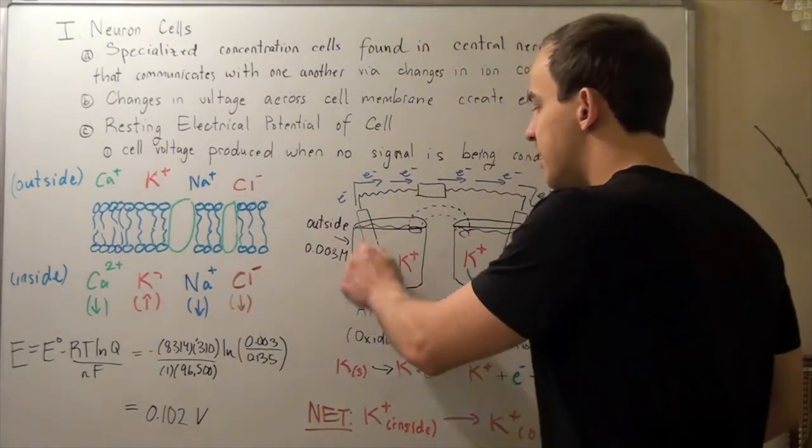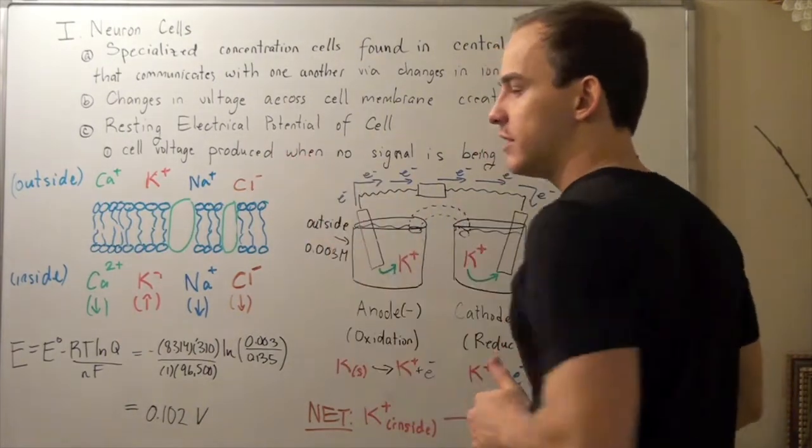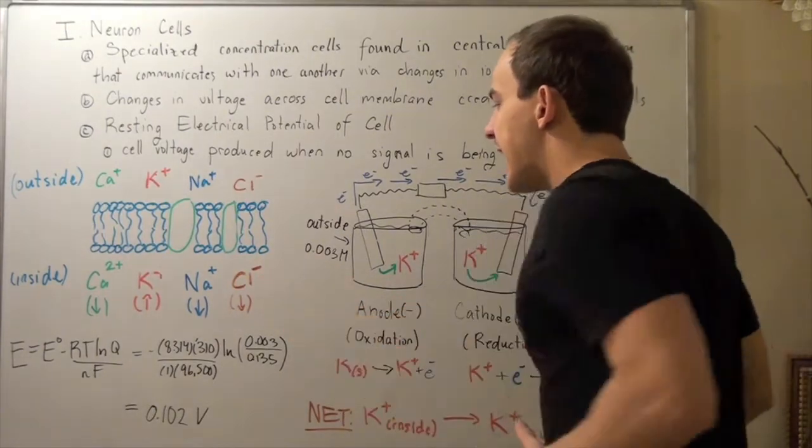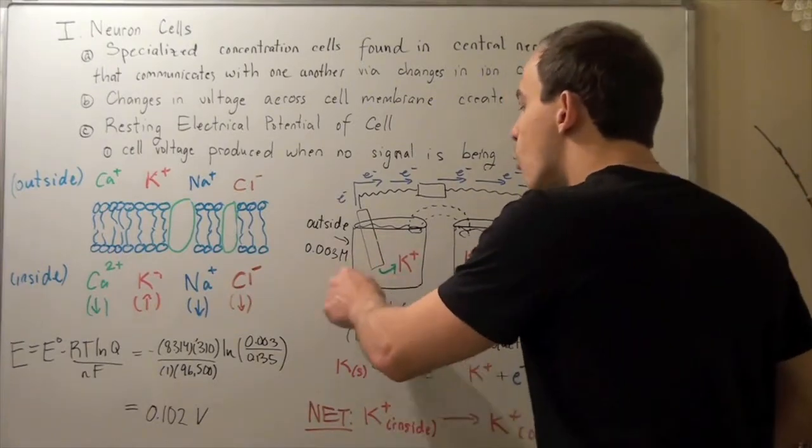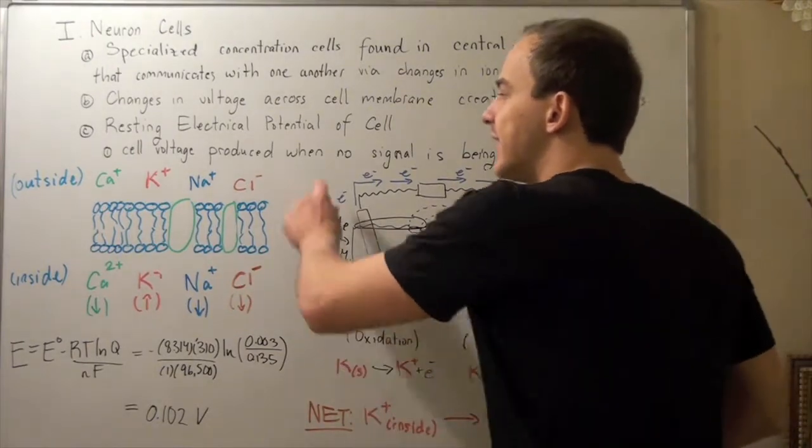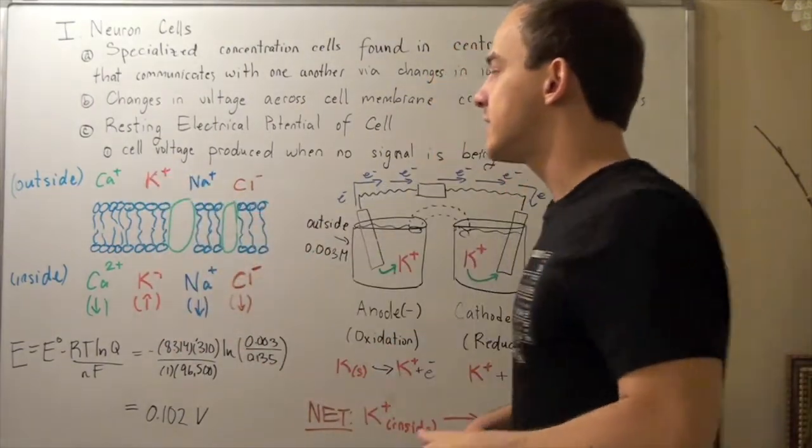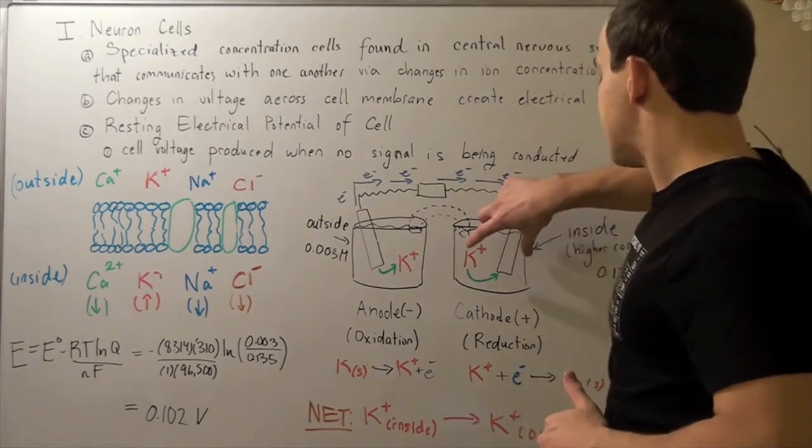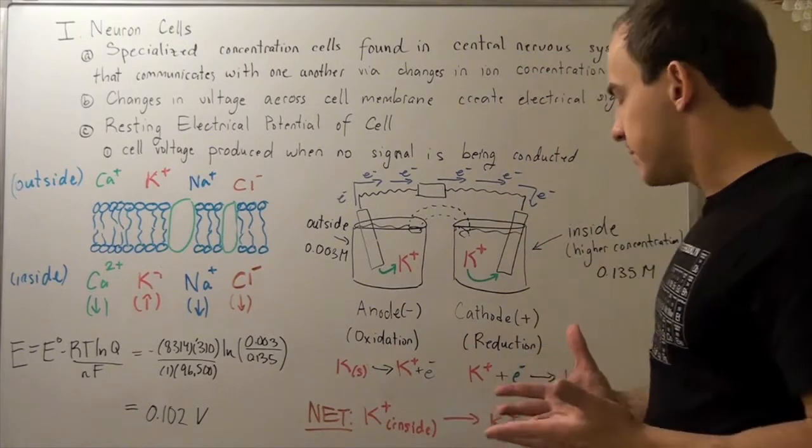And the solution in this anode is the outside solution, and the cathode is the inside solution. That's because, initially, in a concentration cell, this is more dilute. That means it's the outside, because we have less potassium on the outside than on the inside. So, this must be the inside.